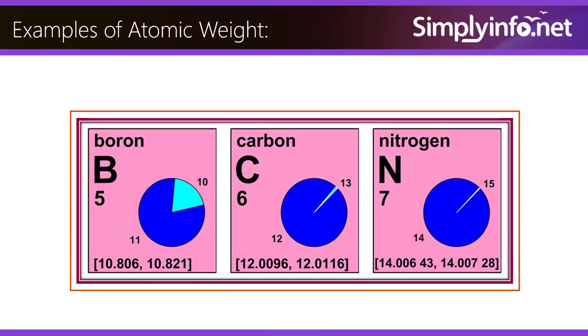Examples of atomic weight: Boron 5, Carbon 6, Nitrogen 7.